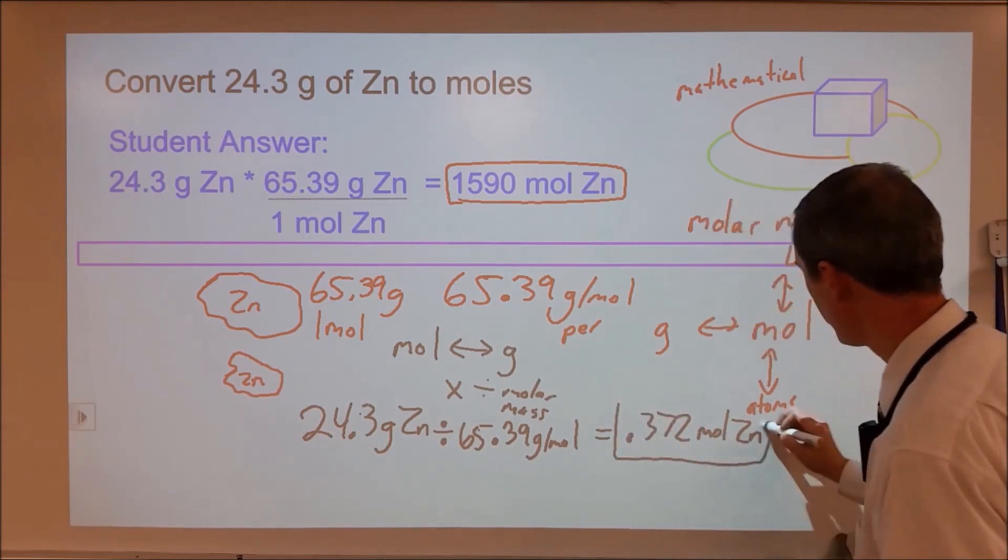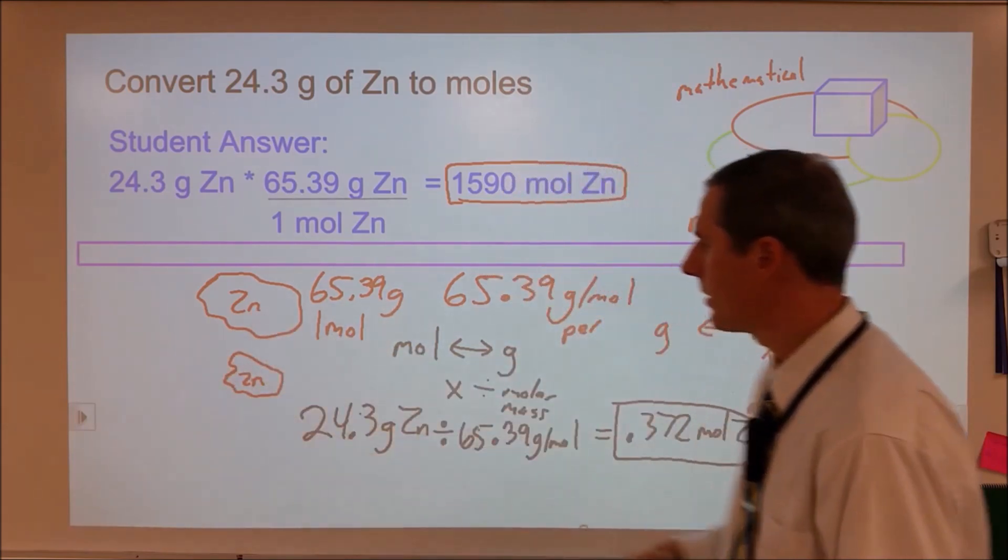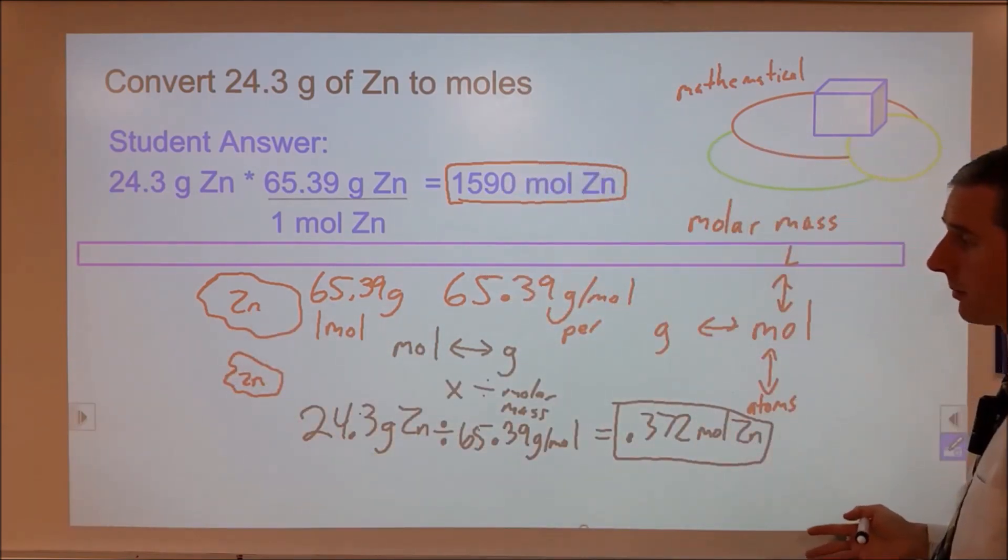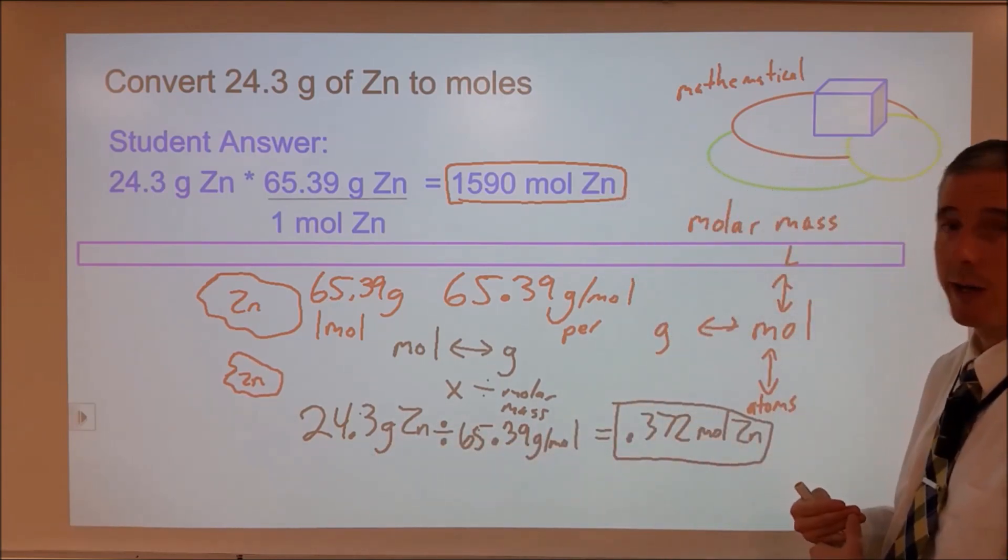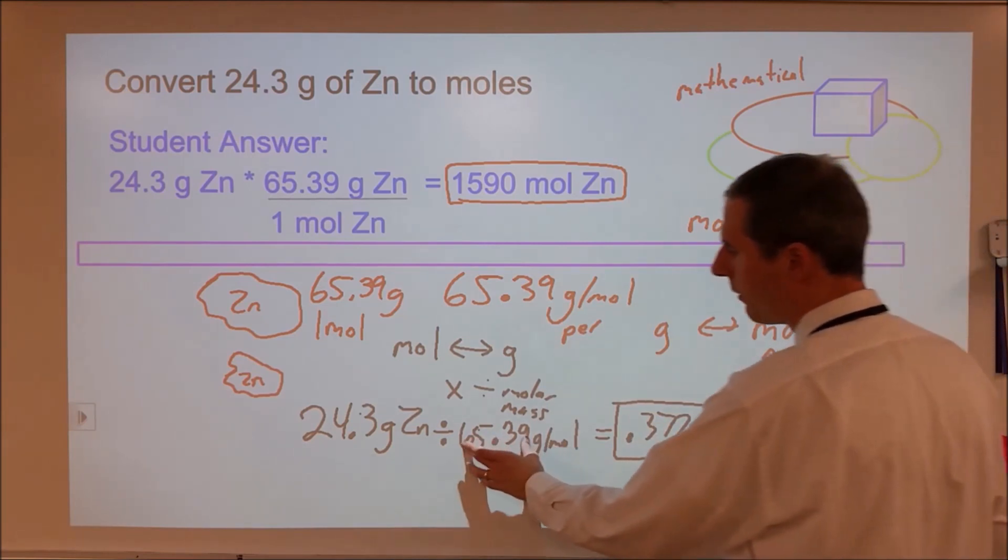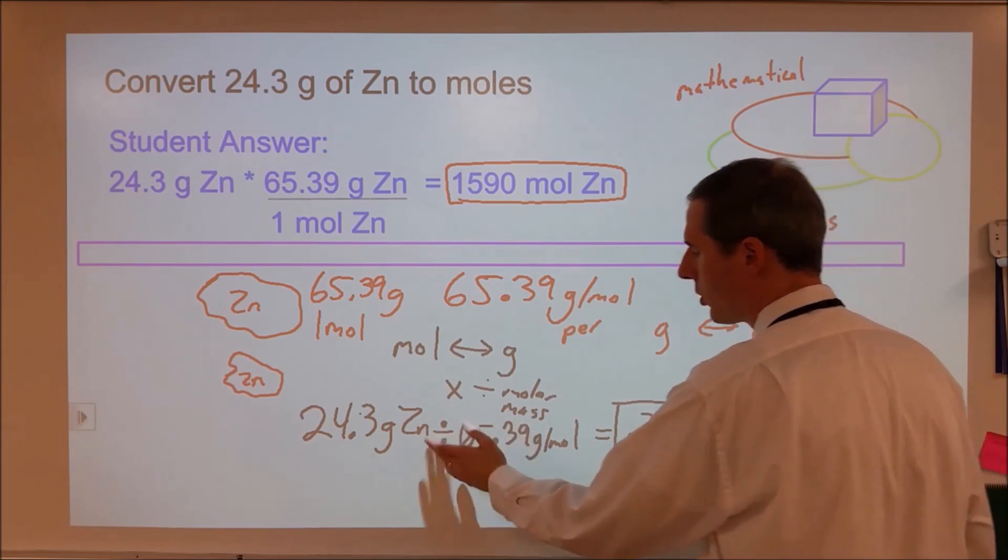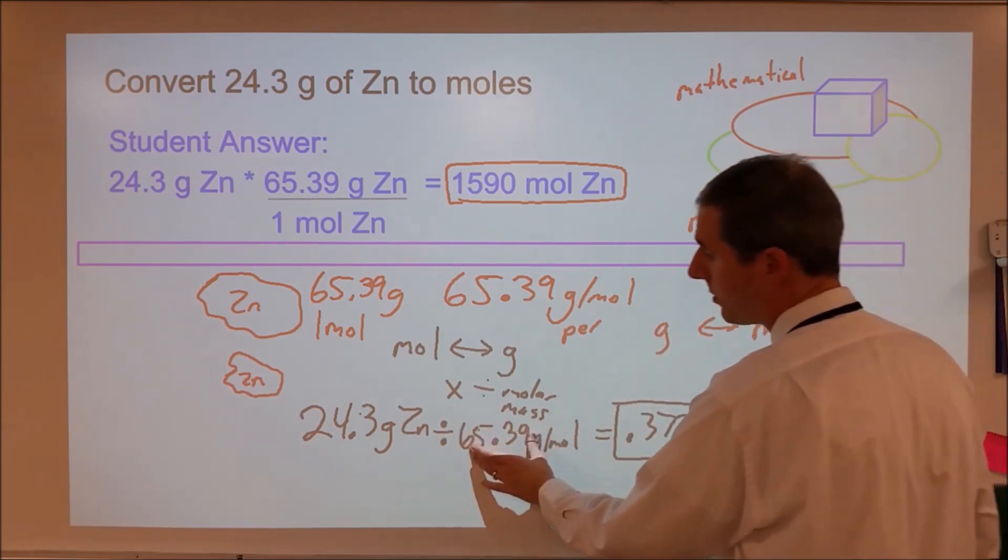So 0.372 makes sense. I have less than one mole here based on the sizes that I've drawn. That answer makes sense to me. That fits into my scheme. Now, any time you change from grams to moles, you will divide by the molar mass to get there. So this might eventually become algorithmic. But it's important in the first couple times that you just sit there and think, should I be multiplying or dividing? Which answer makes sense? And which process makes sense?